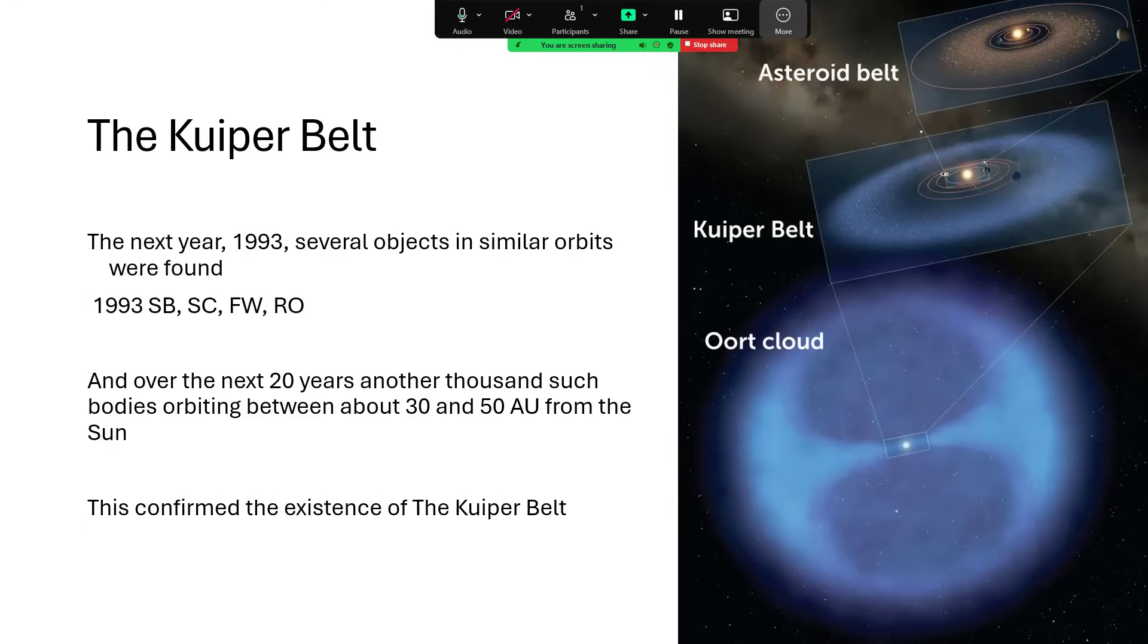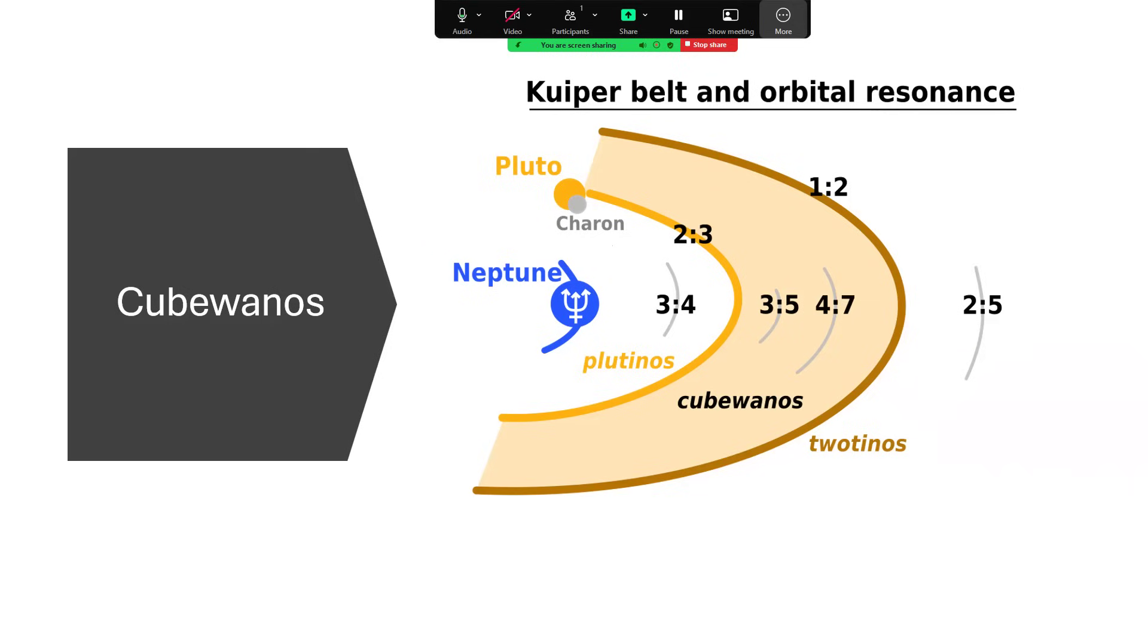Since then we've been studying the orbits of these Kuiper Belt objects, these trans-Neptunian objects, and a pattern seems to have emerged. This all relates to the ratio of their orbital periods, their year length, compared to that of Neptune. Pluto has turned out to be in a three to two ratio with Neptune.